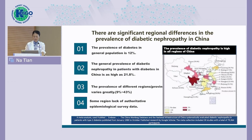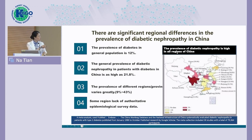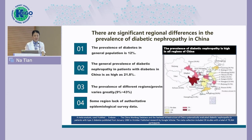In some provinces, the diabetes with CKD rate is very high, like Sichuan province. However, in some regions, especially the lower income regions like northwest and southwest of China, there is a lack of authoritative epidemiological survey data.